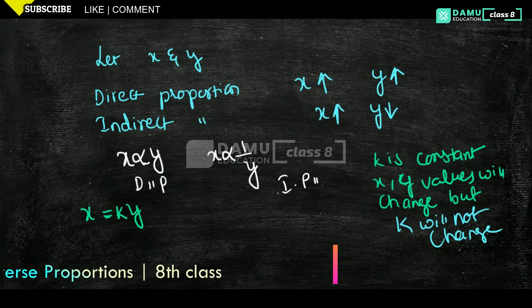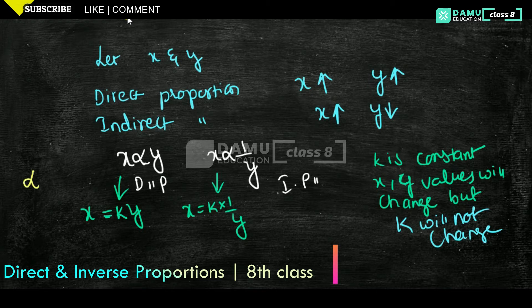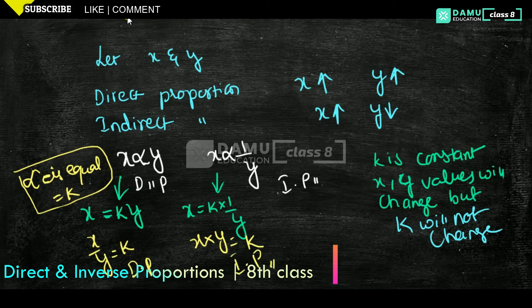For direct proportion: X is directly proportional to K, so X by Y equals K. For indirect (inverse) proportion: X is proportional to 1 by Y, so X into Y equals K. To remember: direct proportion constant is X by Y, and inverse proportion constant is X into Y.